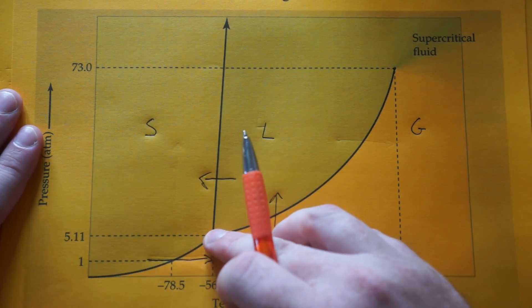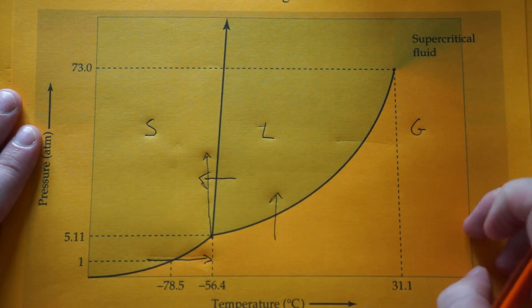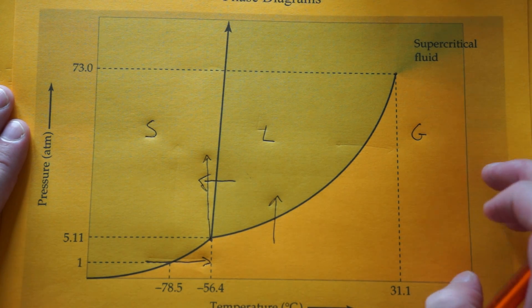The most dense phase—you go north of the triple point. North of the triple point, you're in the solid phase. So solid carbon dioxide is the most dense phase.